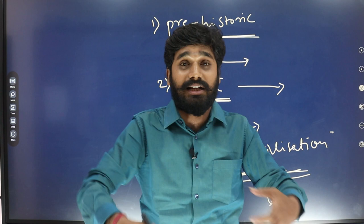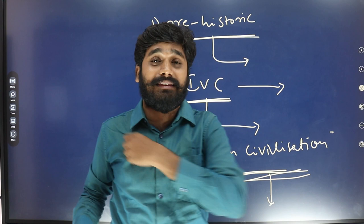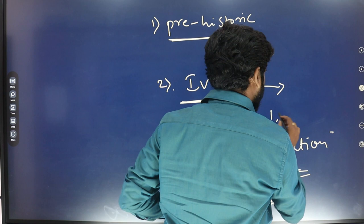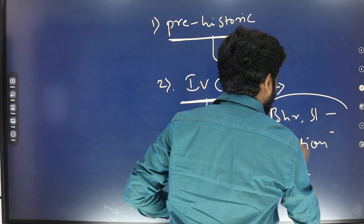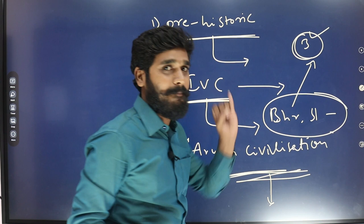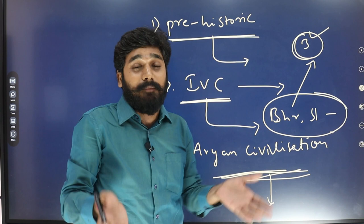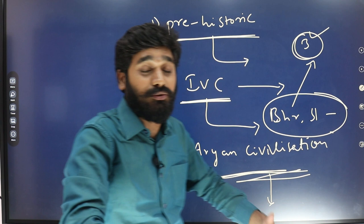The Upanayanam, or threading ceremony, is related to the Brahmana, Kshatriya, Vaishya, and Shudra — the four Varnas. However, only three Varnas — Brahmana, Kshatriya, and Vaishya — are eligible for the Upanayanam. Shudras are not eligible, which is why Shudras were fed up with the Aryan civilization and Aryan culture, and sought alternatives.